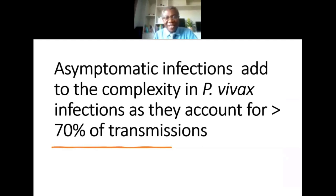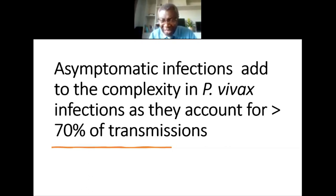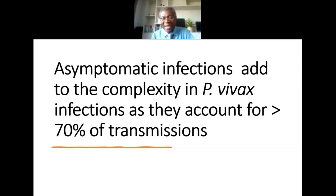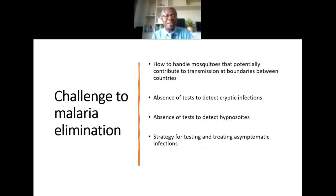Another complexity in P. vivax is asymptomatic infections. In an elimination setting, active detection is recommended to find parasites that do not present symptomatically. In P. vivax, greater than 70% of transmissions occur through asymptomatic infections. This is another conundrum that requires proper assessment and adds to the complexity of designing elimination strategies across regional groups and specific countries.